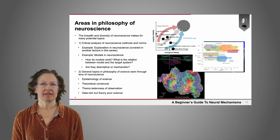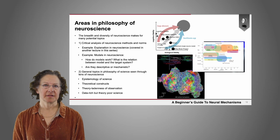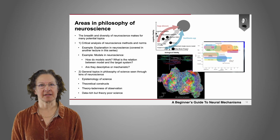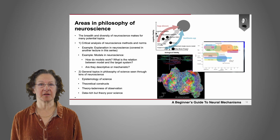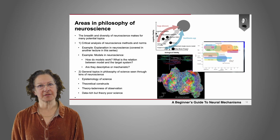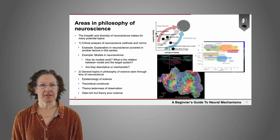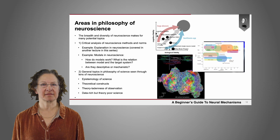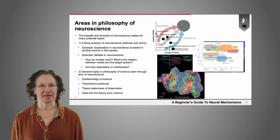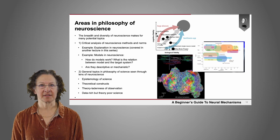Another general topic is philosophy of science seen through the lens of neuroscience — questions in epistemology of science. How do we come to know things about the brain? What do our theoretical constructs in cognition or brain function amount to? For instance, what is memory? Does it really exist? Is there one kind of memory or many kinds? These are questions that neuroscientists address.